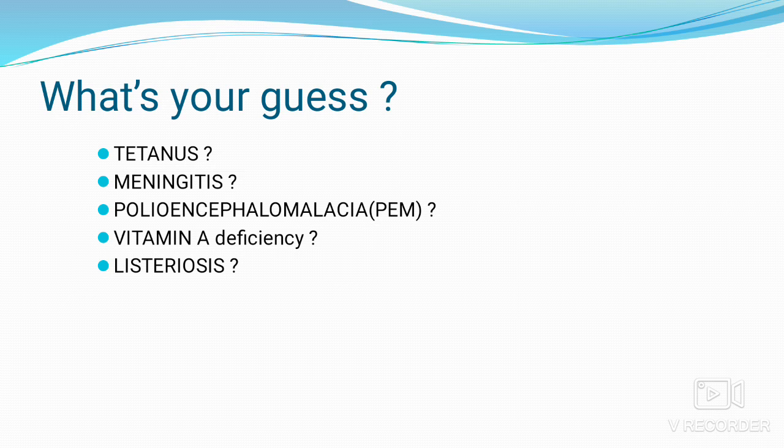Based on the case history, we consider: tetanus, meningitis, polioencephalomalacia, vitamin A deficiency, or listeriosis. In tetanus there will be locked jaw, raised tail, erected ears, and stiffness of limbs. In meningitis, heart rate increases. In PEM, all vital signs including heart rate are normal. Vitamin A deficiency is more common in newborns. PEM occurs in animals on a grain diet. Listeriosis may be confused with PEM, but in listeriosis there will be facial nerve paralysis with partial closure of lips, eyelids, and drooping ears.